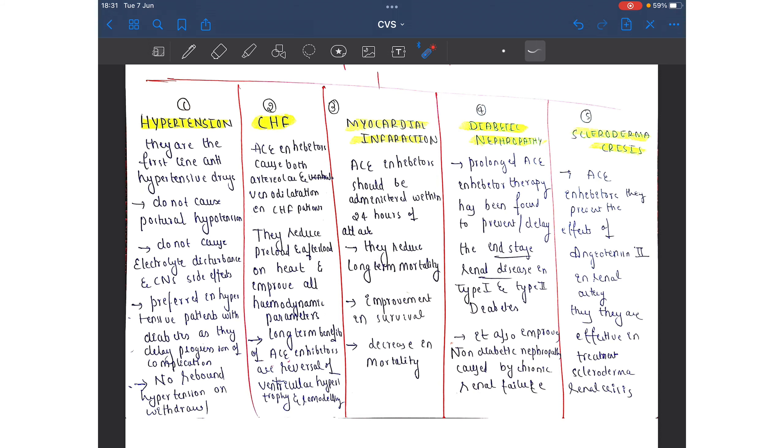They are used in congestive heart failure because ACE inhibitors are going to reduce the blood volume and reduce the peripheral vascular resistance, thereby the preload and afterload on the heart is reduced, improving all the hemodynamic parameters. Long-term benefits of ACE inhibitors are reversal of ventricular hypertrophy and cardiac remodeling.